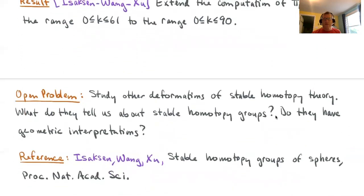The success of this project suggests some future problems for study. In particular, we should be thinking about whether there are other deformations of stable homotopy theory that are also useful. Do those other deformations tell us something new about stable homotopy groups? And also, do they have geometric interpretations? The C-motivic homotopy category has a geometric interpretation in terms of algebraic geometry, and maybe these other deformations have some geometric description in terms of some other type of geometry.